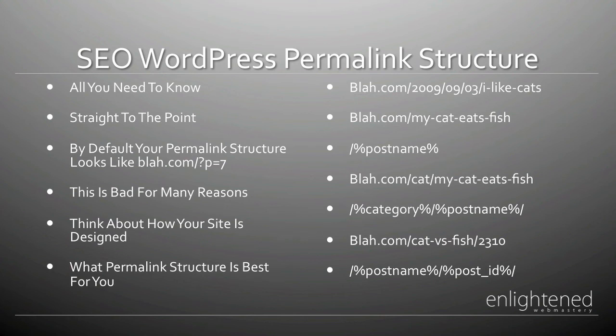Another alternative is to use category followed by post name: %category%/%postname%. This gives you blah.com/category/your-post-name — for example, blah.com/cat/my-cat-eats-fish. This is very useful if you're doing something like a camera blog, where you could have categories for Nikon, Canon, DSLR, and point-and-shoot. People can then navigate directly to a specific category. The downside is you can still end up creating duplicate titles across categories.